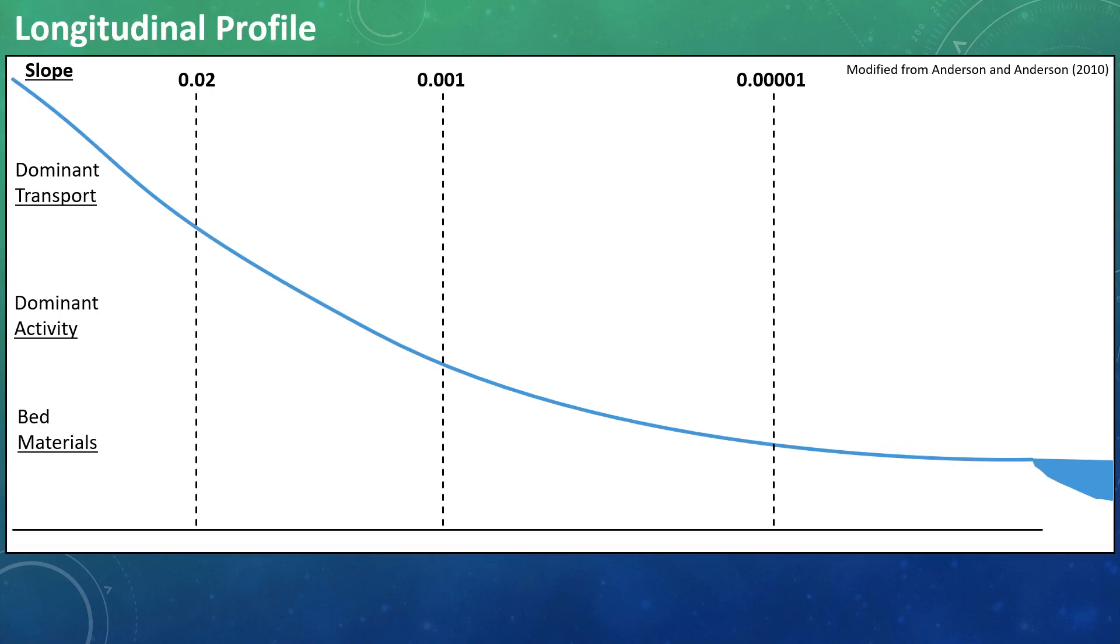Quite simply, the headwater regions represent the section of a stream that is actively expanding the reach of the river, and as a result, many of these streams are much steeper. By the time we get to the mouth, these streams are much larger and are overwhelmed by sediment, resulting in a much lower gradient.